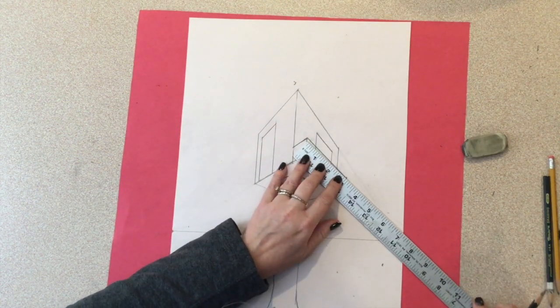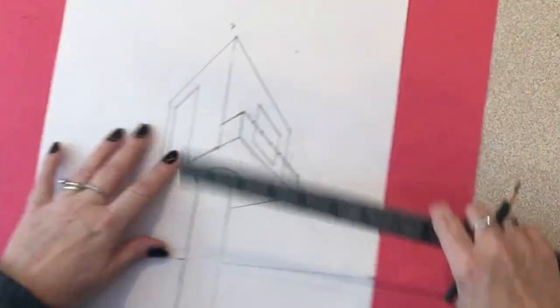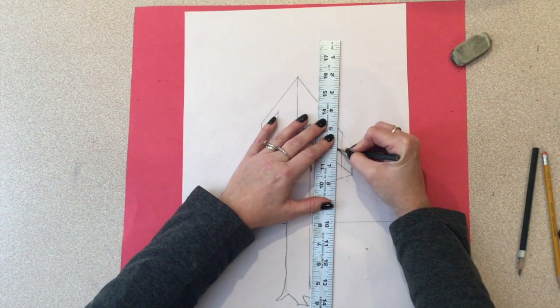I measure out some tick marks to make some bars on the railing every half inch. Perfectly vertical. There you go.